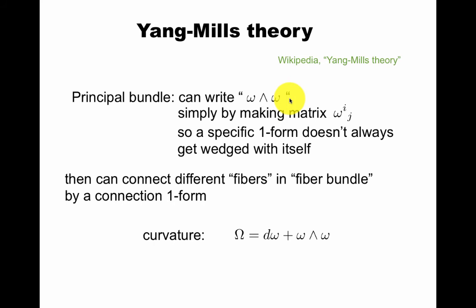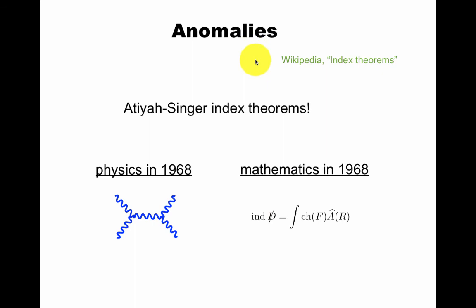Of course, Yang-Mills theory is very important. We can actually write form-wedge form despite the antisymmetry, because if you make omega a matrix, we put a whole bunch of one-forms, and then a specific one-form doesn't always get wedged with itself. This makes sense for a matrix of one-forms. These are very useful. They can connect fibers in fiber bundle by a connection one-form, which is sort of the geometric way to think about Christoffel symbols. The curvature two-form is defined like this. If you have a connection one-form, and this is something that's discussed very nicely in Conlon's book, chapter 11.